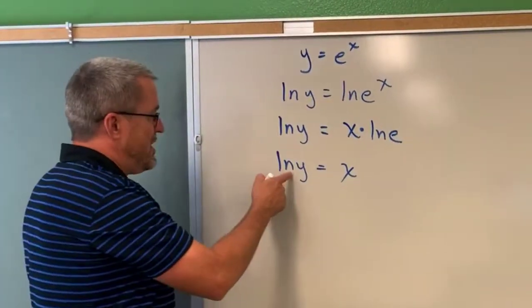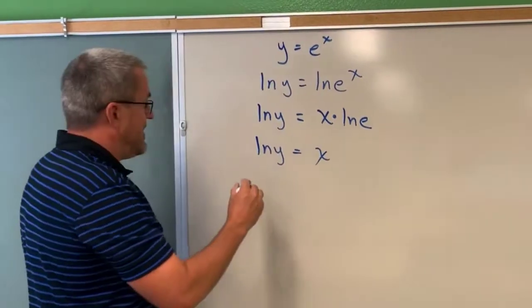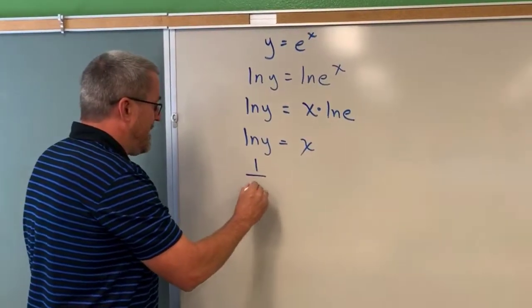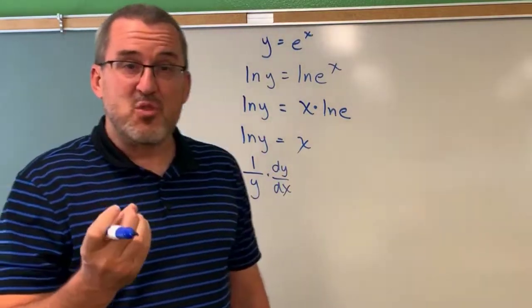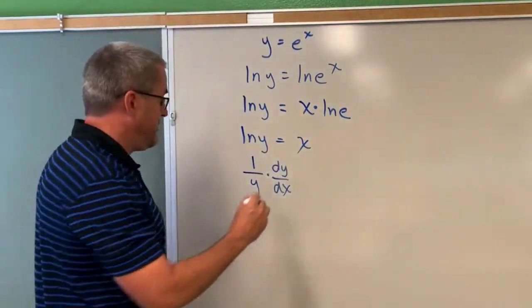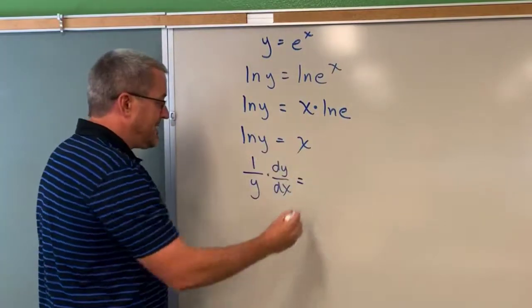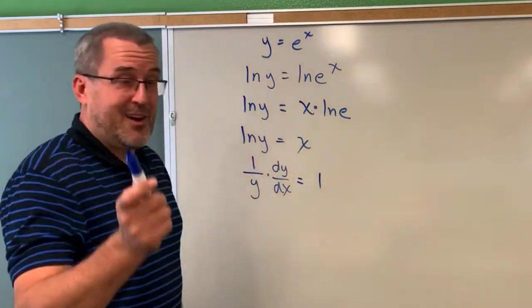The derivative of the natural log of y is 1/y times dy/dx. That's a little bit of chain rule, a little bit of implicit differentiation. The derivative of x is just one.